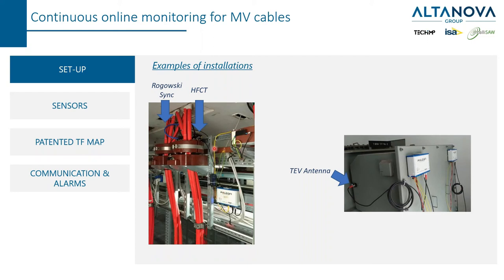This yellow ethernet cable is used to connect Falcon to the substation bus. This is a Rogowski coil used in this case to take the 50 Hz synchronization signal, and this is the HFCT connected around the shield of the cable. In another example, Falcon is placed on the metallic enclosure through magnets, and the TEV antenna sensor is also placed through magnets.